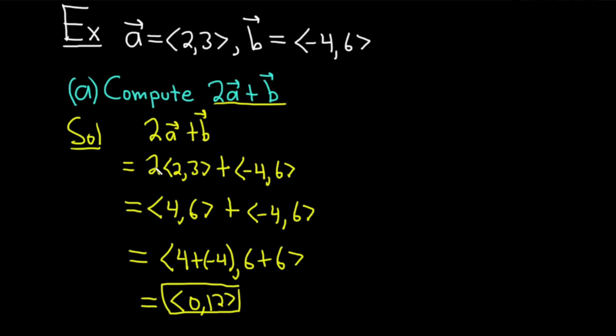So recap, you just take any numbers that are outside the vectors and multiply them through. And then to add the vectors, you just add the components. So for example, here we had the vector 4, 6. So we added 4 plus negative 4, and then we added 6 plus 6. Let's go ahead and do another example.